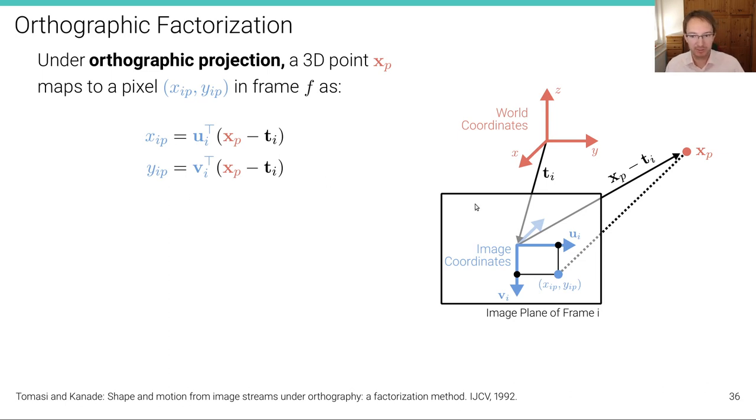As it's an orthographic projection here, what we do is we take that 3D point here and we subtract the translation of the camera coordinate system with respect to the world origin. So this point is expressed in world coordinates. By doing that, we are expressing that point in camera coordinates.